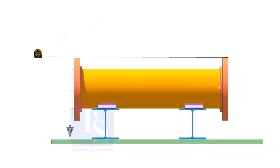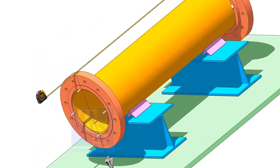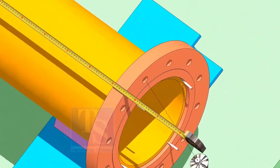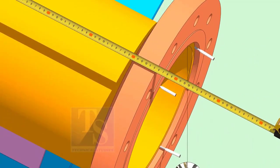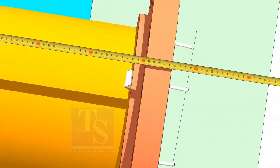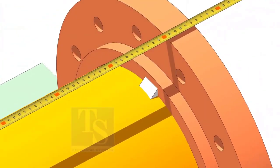Now, make sure the length of the pipe spool is as per the drawing. Tack weld on both sides and repeat the steps we have done on the first flange.